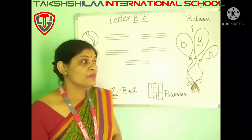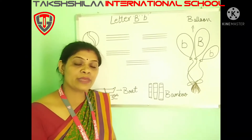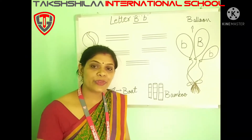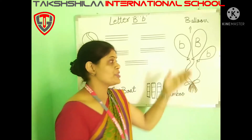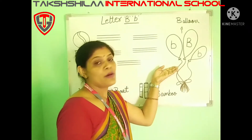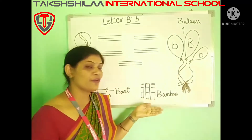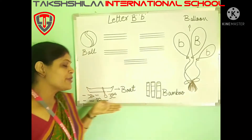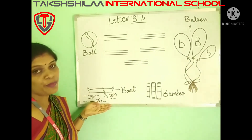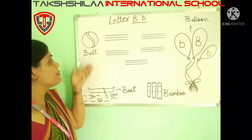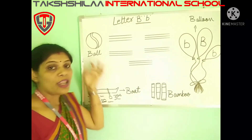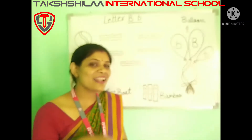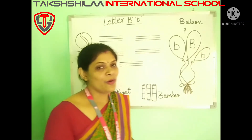Hai na? B se kya kya hota hai? B se is letter se kaunsi kaunsi cheezein hoti hain? B for balloon, B for bamboo, B for boat, and B for ball. And B for banana. Okay?